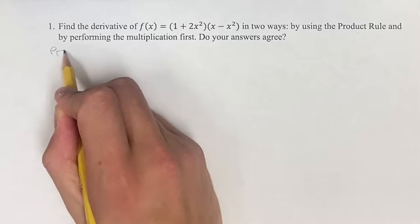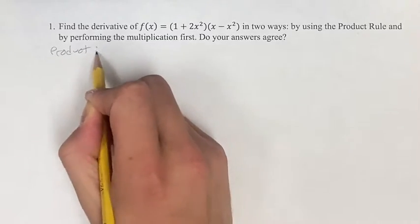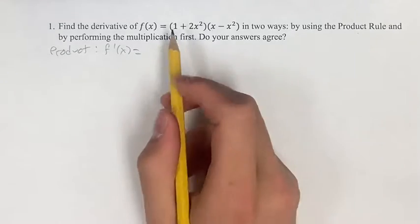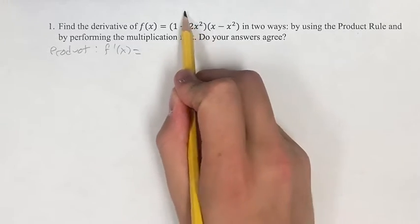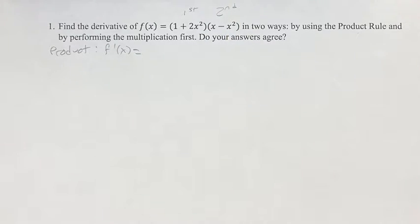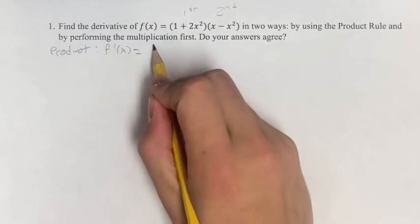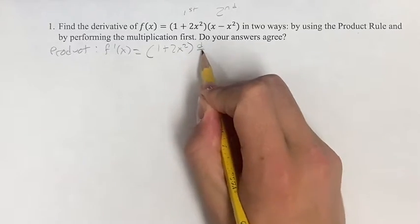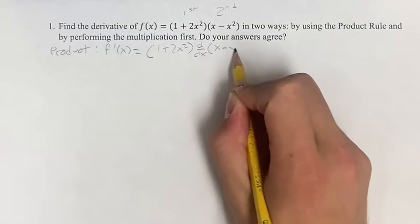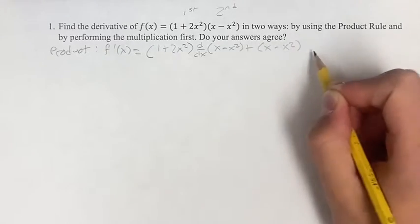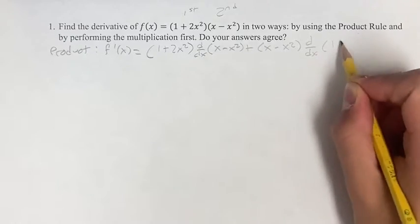So first, by doing it with the product rule, the derivative of f(x) is equal to... If we're thinking of this as the first, this is the second thing that is being multiplied. So we take the first times the derivative of the second plus the second times the derivative of the first.